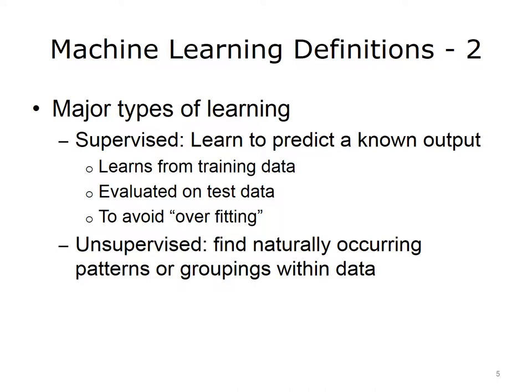In supervised learning, machine learning algorithms learn to predict a known output that they learn from training data and have their effectiveness evaluated on test data. The use of training and test data is done to avoid overfitting the training data. In unsupervised machine learning, we aim to find naturally occurring patterns or groupings within the data.